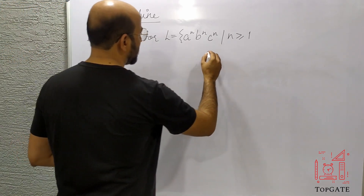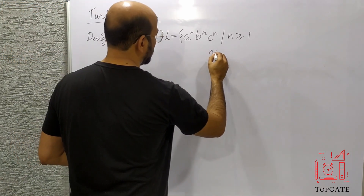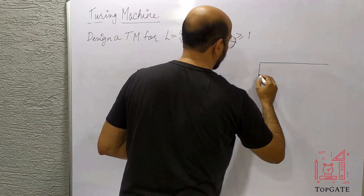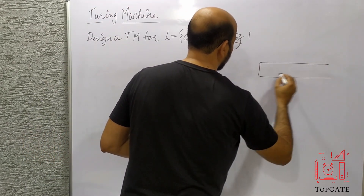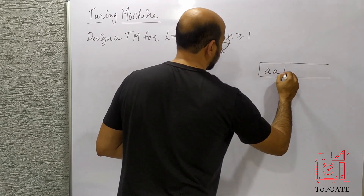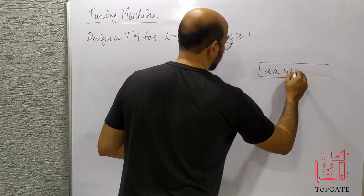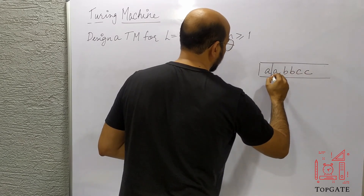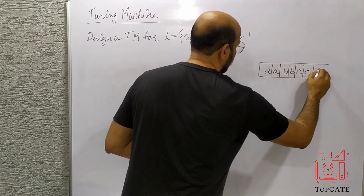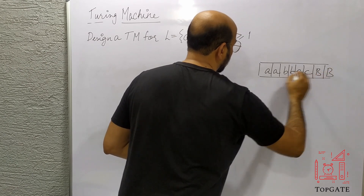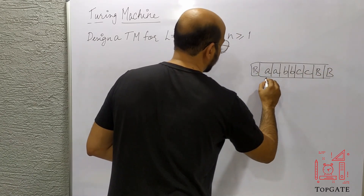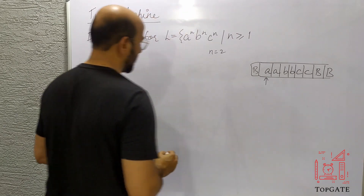Let's take N = 2 and design the tape. For N = 2 we have A, A, B, B, C, C on the tape, with some blank cells as well. The read-write head is currently on the first A.